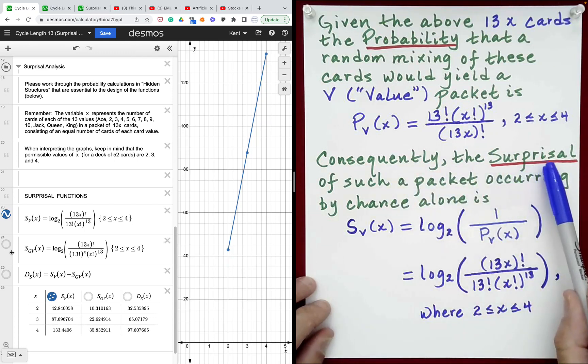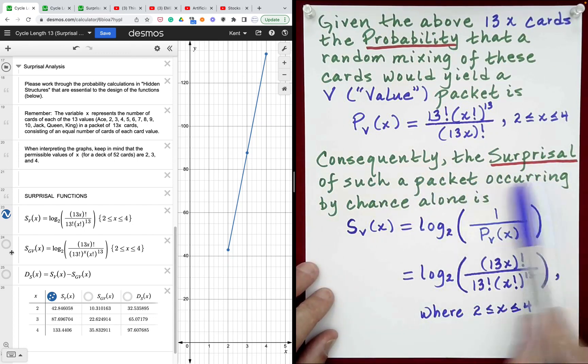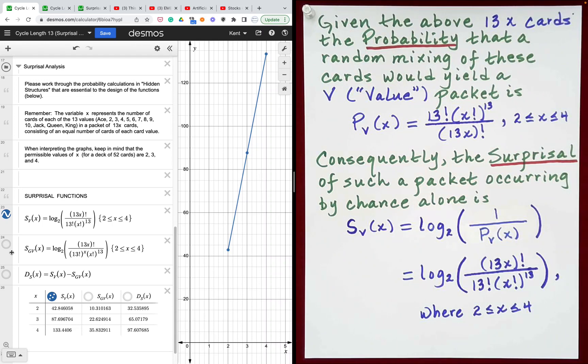Consequently, the surprisal of such a packet occurring by chance alone is log base 2 of 1 over the probability here, which equals log base 2 of this quantity reciprocated. This will give us the surprisal associated with randomly shuffling the 13x cards and finding that they perfectly cycle through all 13 card values in a consistent way. That is how our first surprisal function was built over here on our Desmos activity.